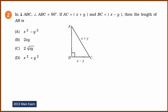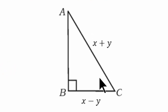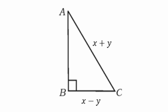Question 2 is also a Pythagoras theorem problem. In triangle ABC, angle B is 90 degrees. AC, which is the hypotenuse, is x plus y. BC, one of the sides, is x minus y. We need to find the length of AB. We use Pythagoras theorem to find the value of AB.